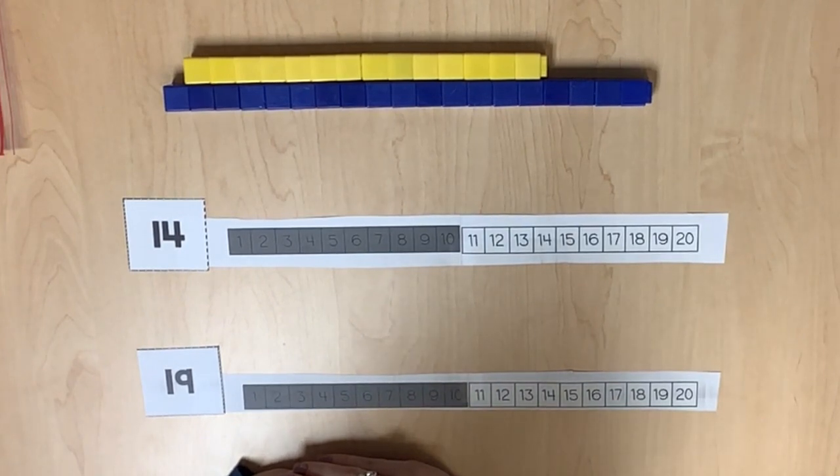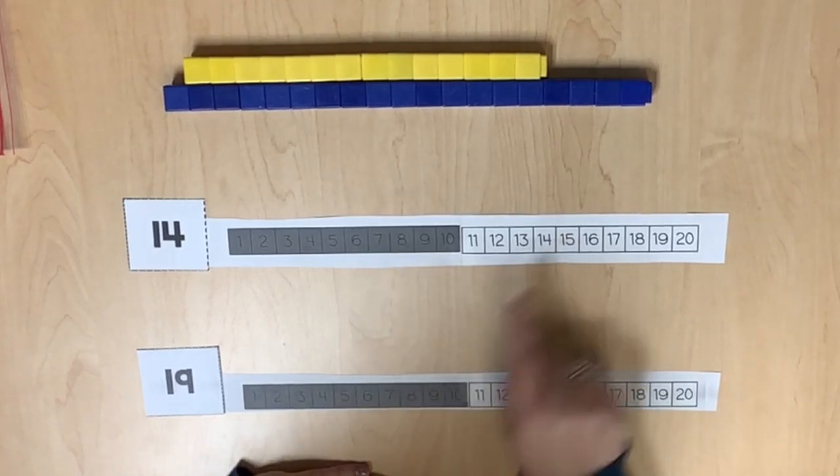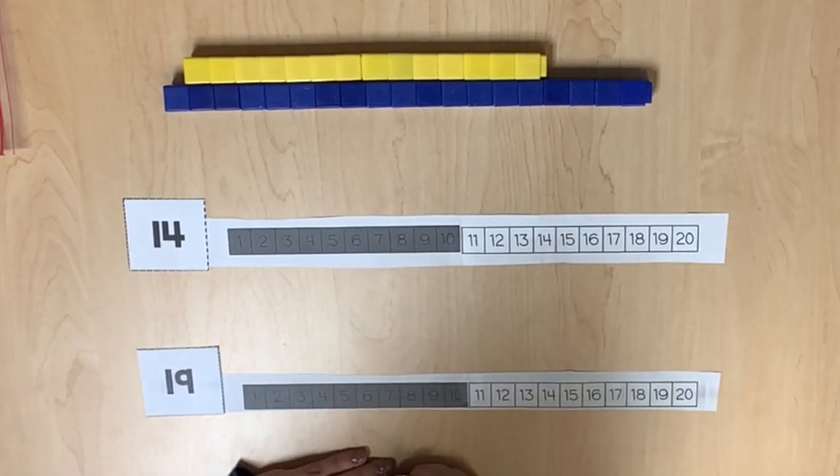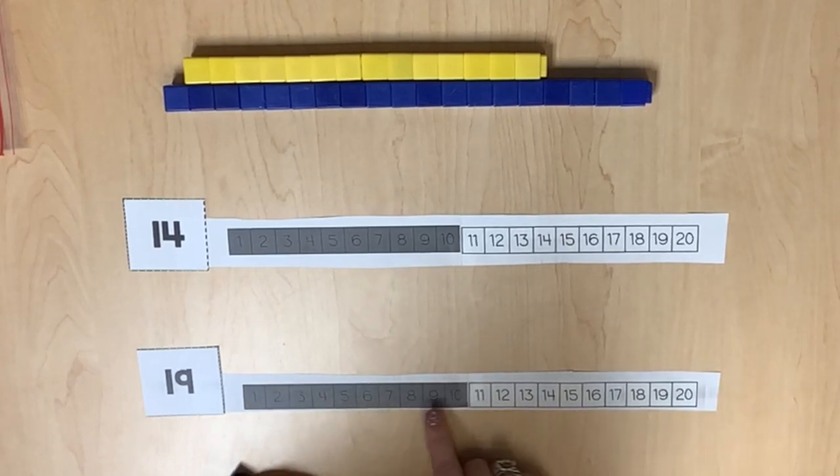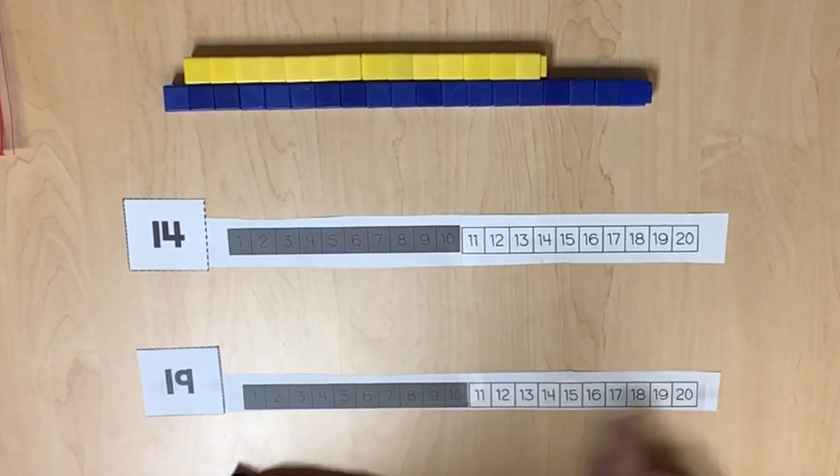When we compare greater numbers, we can use two number paths with values to 20 arranged one on top of another. The number paths recommended for comparisons to 20 are purposefully shaded gray for the numbers 1 to 10 and white for the numbers 11 to 20.